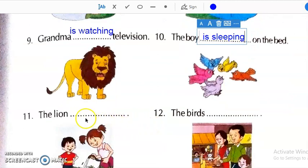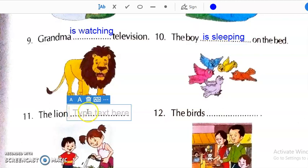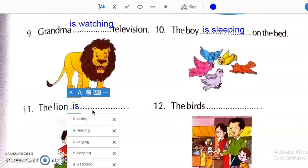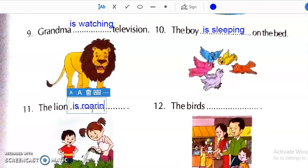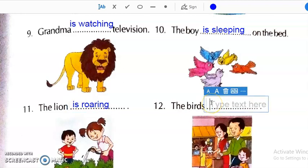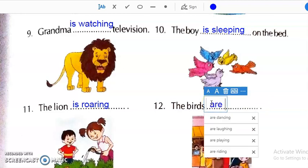And then, next one the lion dash. What is lion doing? He is roaring. Then, next the birds dash. What they are doing? Birds are flying. So, here we will write are flying.